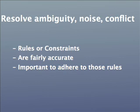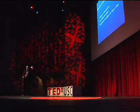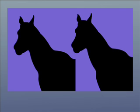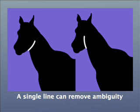The point is to resolve ambiguity, noise, and conflict. These operate by rules and constraints. It's for the most part fairly accurate — you have a fairly accurate representation of the world, and it's also very important for you to adhere to those rules. Let's look at this particular image of two silhouettes of a horse. All we have to do is add a little line here, and note — now they appear to be facing in different directions. I took an ambiguous image, and just by adding a slight tip, the brain resolves it. Your brain does not need a lot of information to resolve ambiguity.